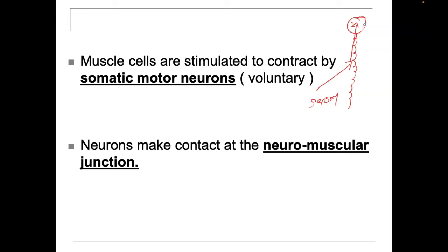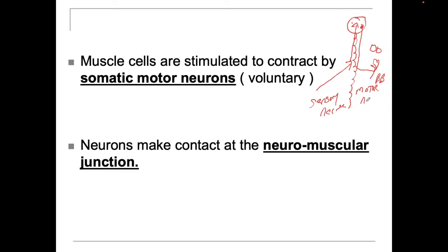After it's processed, the brain sends information down and out. Maybe it's going to the heart to make the heartbeat, maybe it's going to the lungs for breathing, maybe it's going to the biceps brachii muscle to make it contract. So the outgoing messages are called motor information. In order to bring sensory information up and into the neural system, we need sensory nerves. And to send the motor information out, we need motor nerves.